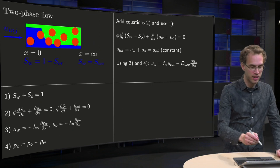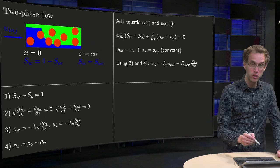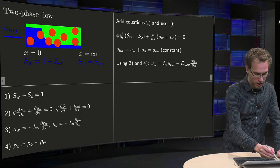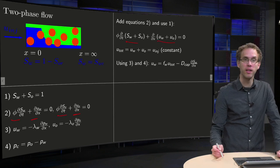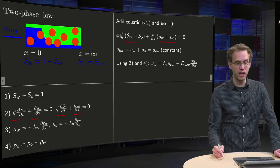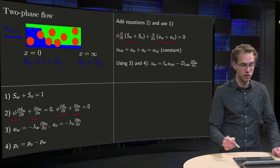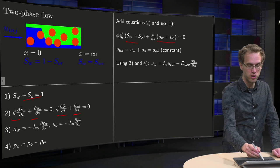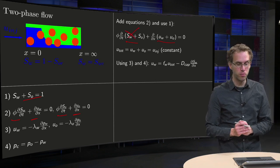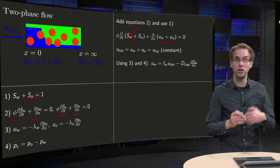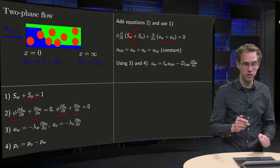If we add equations 1 and 2, what do we get? We get this term plus this term, and this term plus this term. We know that s_w plus s_oil equals 1 is constant, so this term drops out. The d/dx of water velocity plus oil velocity is zero, so the total velocity is constant.